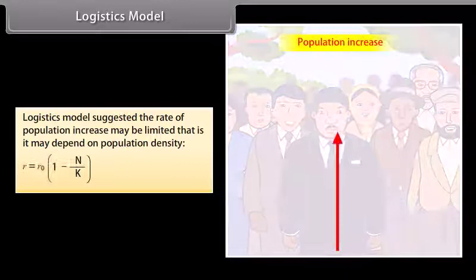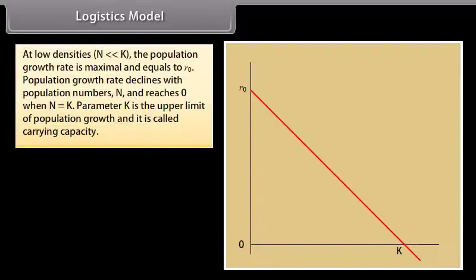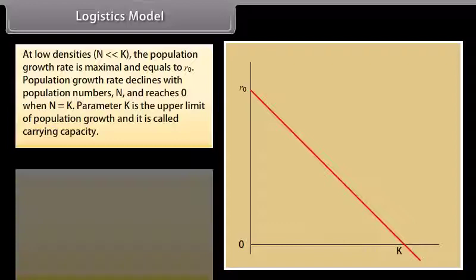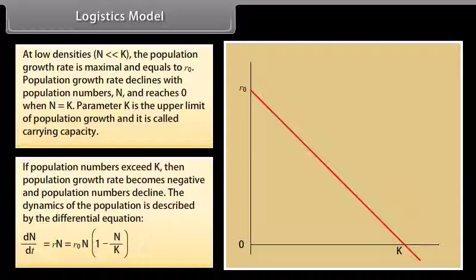Logistic model: The logistic model suggests the rate of population increase may be limited — that is, it may depend on population density. The equation is: r = r0 × (1 − N/K). At low densities, where N is much less than K, the population growth rate is maximum and equals r0. Population growth rate declines with population numbers N and reaches 0 when N equals K. The parameter K is the upper limit of population growth and is called carrying capacity. If population numbers exceed K, then population growth rate becomes negative and population numbers decline. The dynamics of the population is described by the differential equation: dN/dt = r0 × N × (1 − N/K).